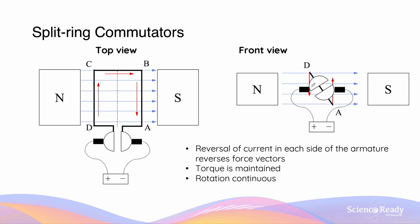This is significant, because when the commutator connected to side D makes contact with the left brush, this will let current flow from D to C. The current direction has remained the same — going from the positive terminal of the battery all the way around back to the negative terminal.